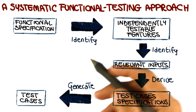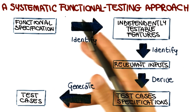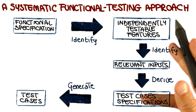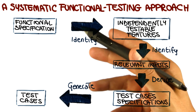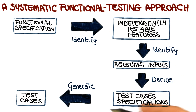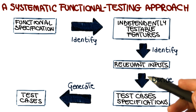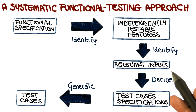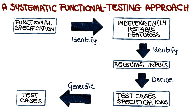What we just saw with the category partition method is a specific instance of this systematic functional testing approach — a specific instance of the steps that we represented here. As I mentioned earlier on, this is not the only way in which you can generate test cases starting from a functional specification. In particular, the step in which we identify relevant inputs and then combine them to generate test case specifications can also be done in different ways.